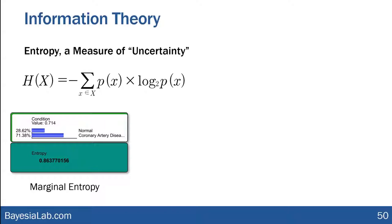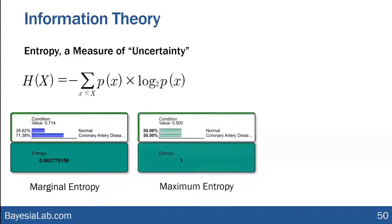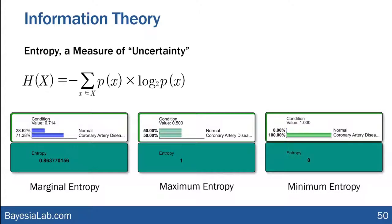Is this a lot or a little by itself? We can't really interpret that alone — rather, we need to compare it to the maximal possible entropy, which would be a 50-50 distribution: perfect uncertainty, like flipping a coin, giving an entropy of 1. Conversely, the minimum possible entropy is the complete absence of uncertainty — if we know a patient has the disease, entropy is zero. These boundaries give us a sense of where we stand with the current distribution of condition.